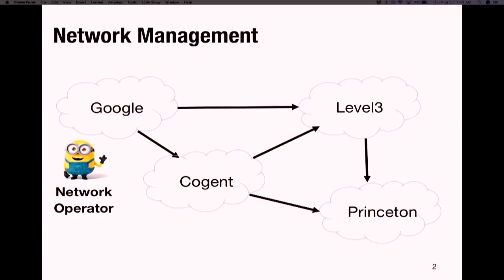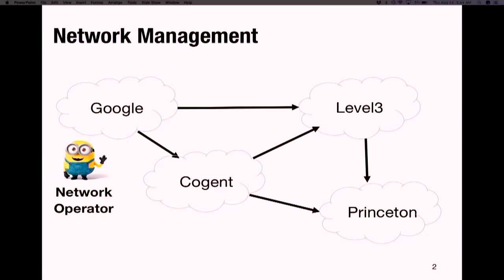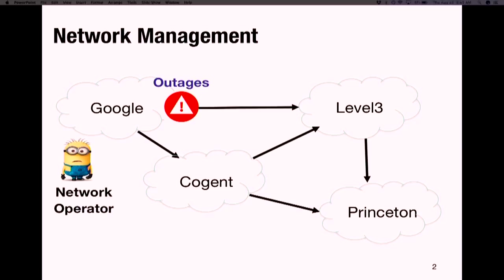Today I'll be presenting Sonata, a query-driven streaming network telemetry system that is both flexible and scalable. The onus of making the network work is on network operators. However, in recent years, with the proliferation of internet-connected devices and applications, the complexity of network management has increased significantly. To keep networks running, operators have to handle various events such as outages, congestion, and cyber attacks, and to handle these events, they first need to detect them — there is a need to perform network monitoring.